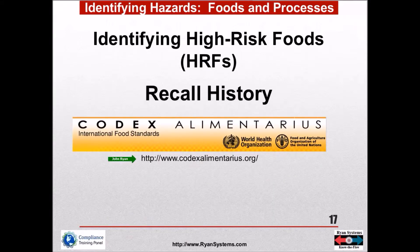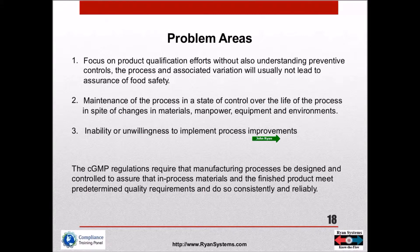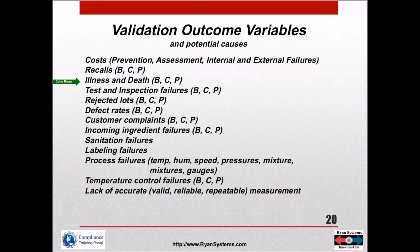Under the rule and CGMP, manufacturing processes must be designed and controlled to ensure that in-process materials and finished products meet predetermined quality standards consistently and reliably. Some kinds of outcome variables — rejected lots — could be due to bacterial, chemical, or physical contamination.